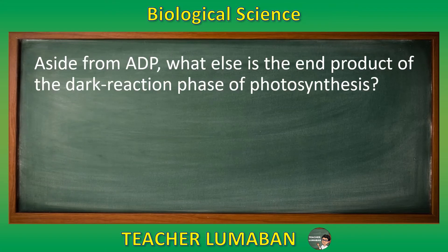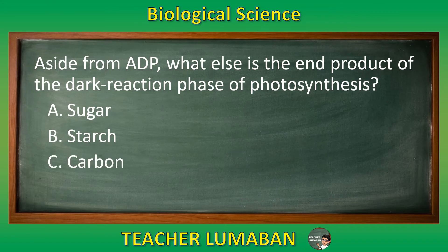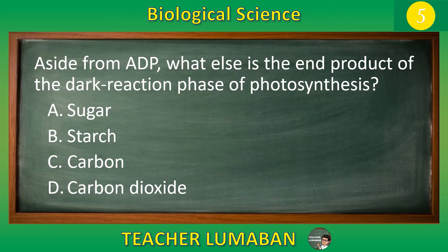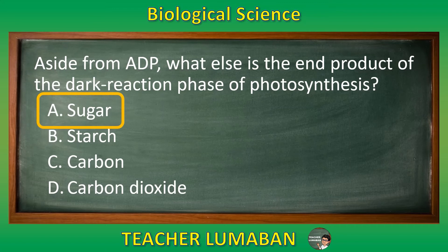Aside from ADP, what else is the end product of the dark reaction phase of photosynthesis? Letter A: sugar. Letter B: starch. Letter C: carbon. Letter D: carbon dioxide. The correct answer is letter A, sugar. Aside from ADP, sugar is also the end product of the dark reaction phase of photosynthesis.